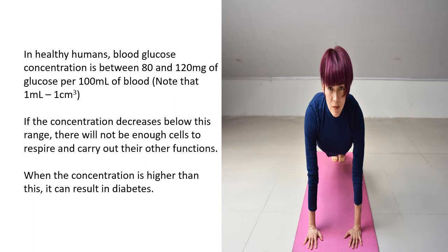In healthy people, blood glucose concentration is between 80 and 120 milligrams of glucose per 100 millilitres of blood. If this concentration decreases beneath this range, things would not happen normally because cells need glucose to respire and carry out other functions — glucose is the preferred fuel for most cells, particularly brain cells. When the concentration is higher than this range, you can have issues with diabetes. This brings us back to the concept of the set point, which in this case is really a set range.